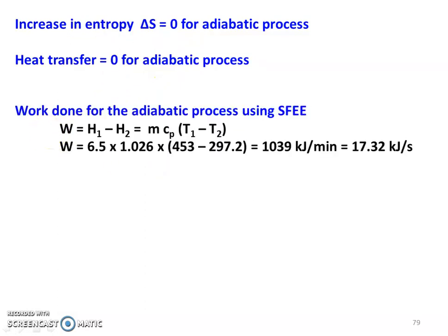The change in entropy delta S equal to 0 for adiabatic process. And the heat transfer for adiabatic process, that is also 0. Then the work done for the adiabatic process using the steady flow energy equation: W equal to H1 minus H2, which is MCP into T1 minus T2. So M equal to 6.5 kilogram per minute into 1.026 into 453 minus 297.2 equal to 1039 kilojoules per minute, which is 17.32 kilojoules per second. That is the answer to the problem.